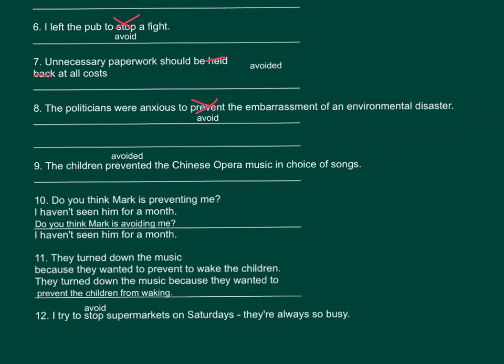Number 7: Unnecessary paperwork should be avoided at all costs. Number 8: The politicians were anxious to avoid the embarrassment of an environmental disaster — 'avoid' here means prevent. Number 9: The children avoided the Chinese opera music in their choice of songs. Number 10: Do you think Mark is avoiding me? I haven't seen him for a month. Number 11: They turned down the music because they wanted to prevent the children from waking. Number 12: I try to avoid supermarkets on Saturdays — they are always so busy. Now do the exercise to test yourself.